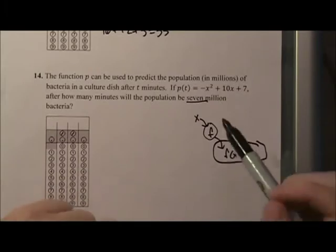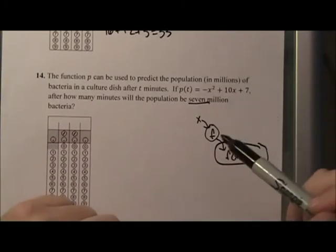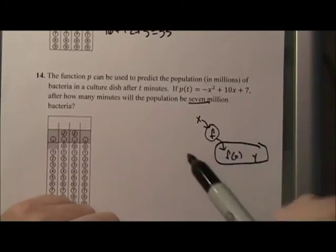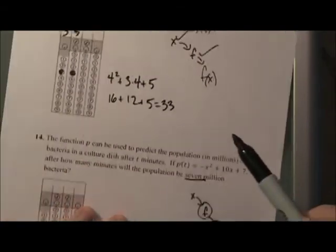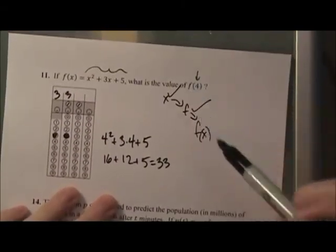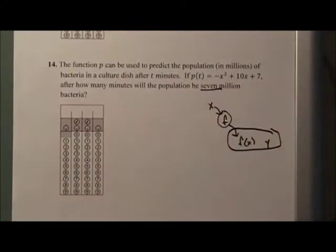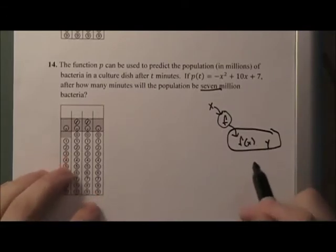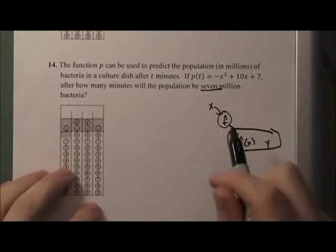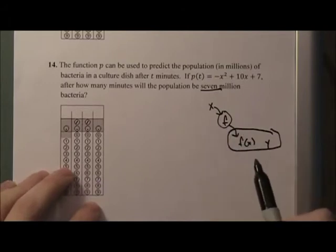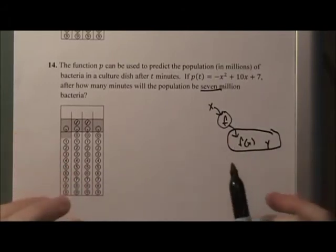So in this case they're giving you the function and the output and asking you to find the input. In the previous one we saw that they were giving you the input and the function asking for the output. So there's a huge difference and that sort of throws a lot of students for a loop. But I'm going to show you how to do those and it's really not that bad. If they give you the output and the function, just set the function equal to the output and solve for the variable.